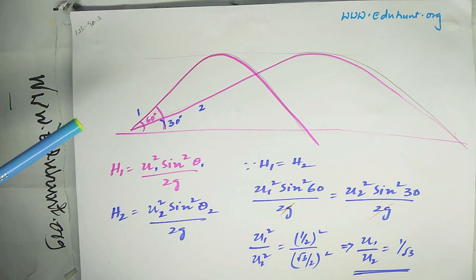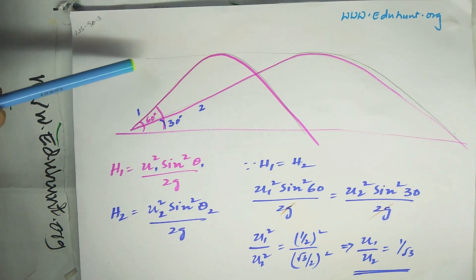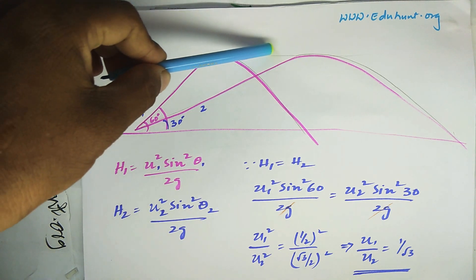Two bodies are thrown with different angles. One with 60 degrees and the second one with 30 degrees. Both bodies attain the same height.